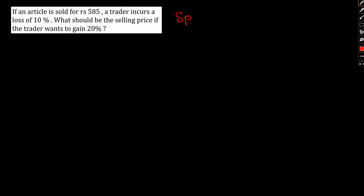It's given that selling price is rupees 585, and the trader incurs a loss of 10%. Therefore, CP into 0.9 will be the selling price because there's a loss. So CP will be the greater value.